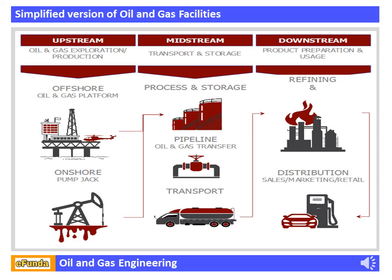The upstream sector includes the searching for potential underground or underwater crude oil and natural gas fields, drilling of exploratory wells, and subsequently drilling and operating to bring crude oil or raw natural gas to the surface. The midstream sector involves transportation by pipelines, rail, barges, oil tankers, or trucks, storage, and wholesale marketing of crude or refined petroleum products.